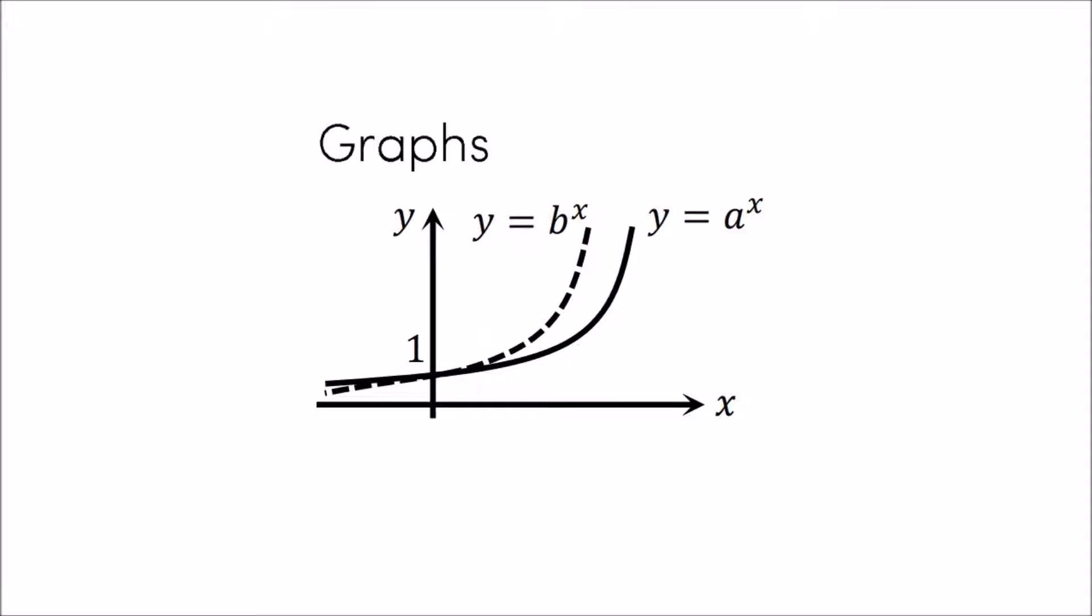a and b are just numbers or constants like 2 and 3 for example. The graph a to the power of x gets steep quickly for positive x values and gets very shallow for negative x values. b is bigger than a so it gets even more steep and shallow.